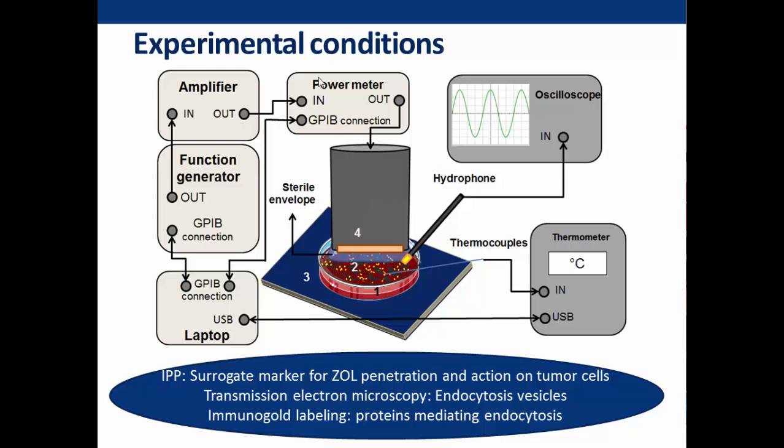IPP was used as a surrogate marker of ZOL penetration and action on tumor cells, and was measured using mass spectrometry. Transmission electron microscopy was used to observe endocytosis vesicles, and transmission electron microscopy with immunogold labeling was used to evaluate which proteins are involved in mediating endocytosis.